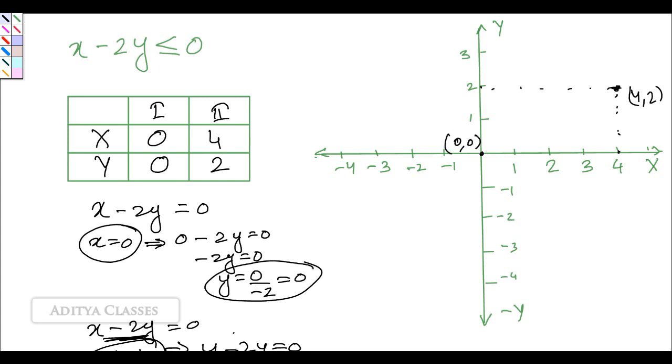This becomes our constraint line. The problem with this line is my original constraint was of type less than. I need to find the less than area of this.